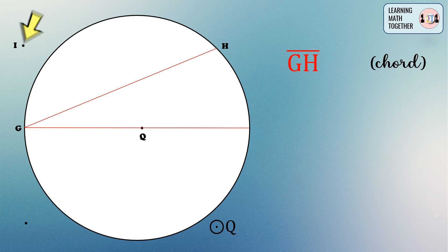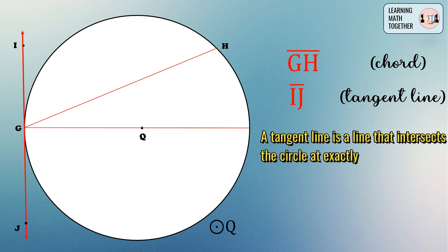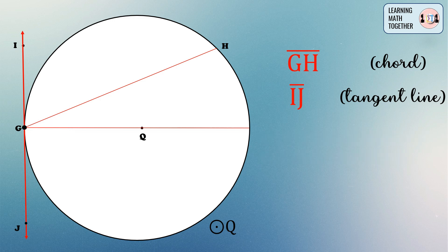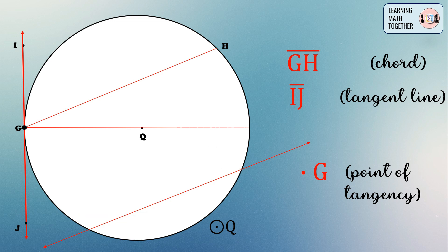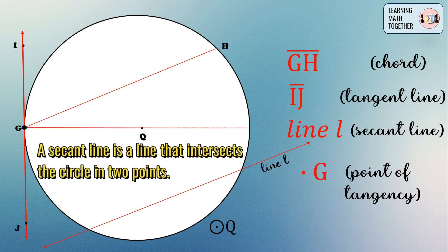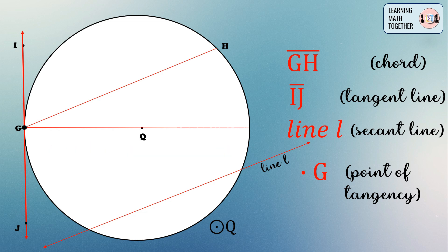Let's draw an external point I and point J, and then draw a line connecting these two points. You will notice that this line intersects our circle. Line IJ is what we call the tangent line. A tangent line is a line that intersects the circle at exactly one point, and that point — point G — is what we call the point of tangency. Now, a secant line is a line that intersects a circle in two points.